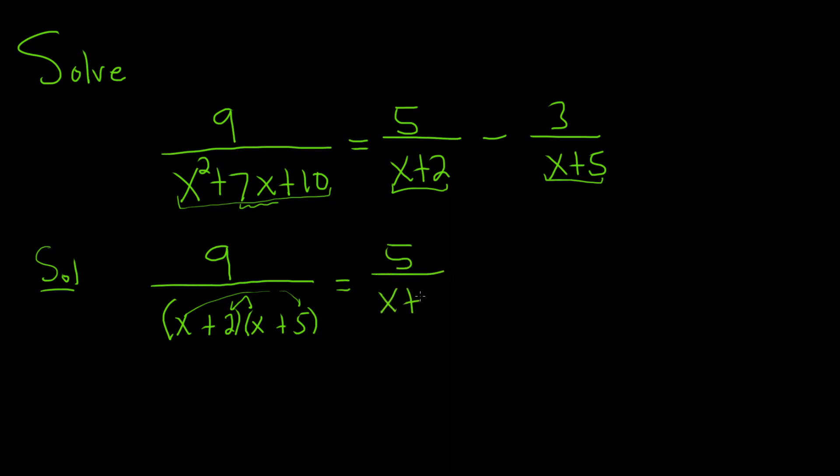So 5 over x plus 2 minus 3 over x plus 5. A really good trick in these problems is if you have to take a guess for factoring, just take the product of these, and again, these problems are always set up to work. So it works out quite nicely.